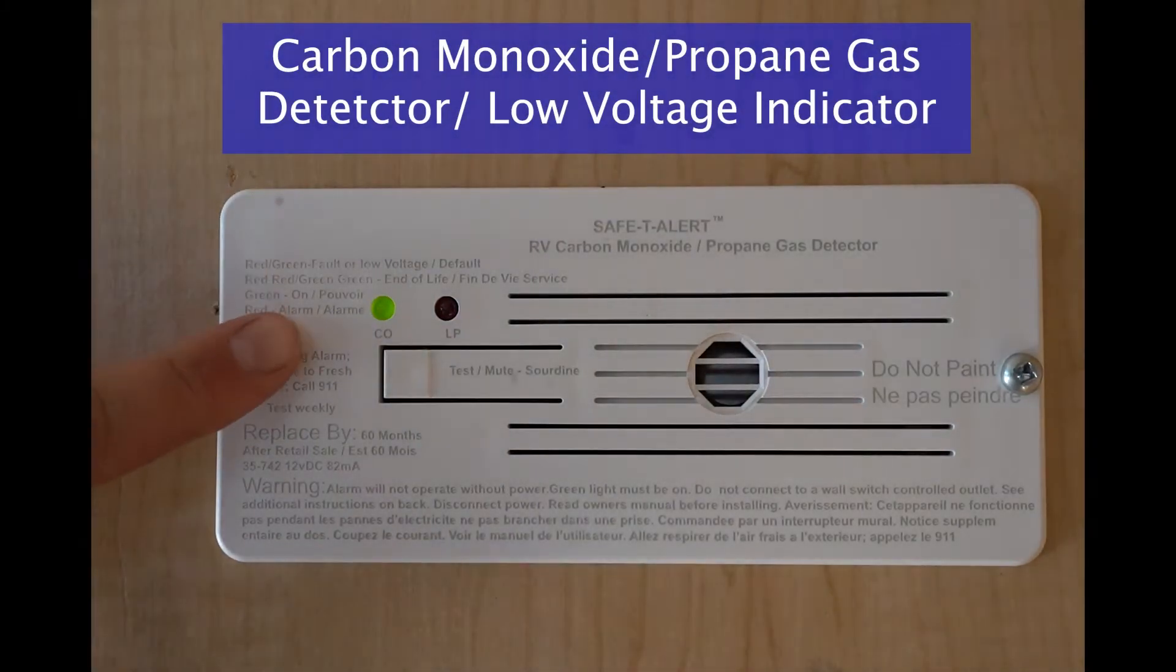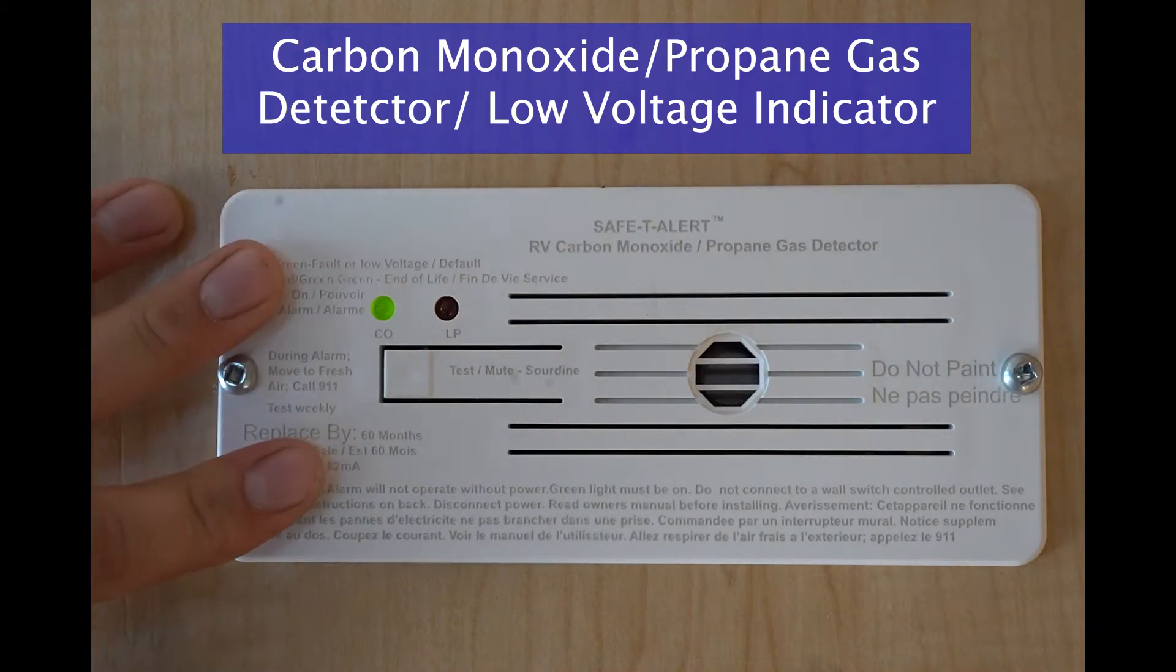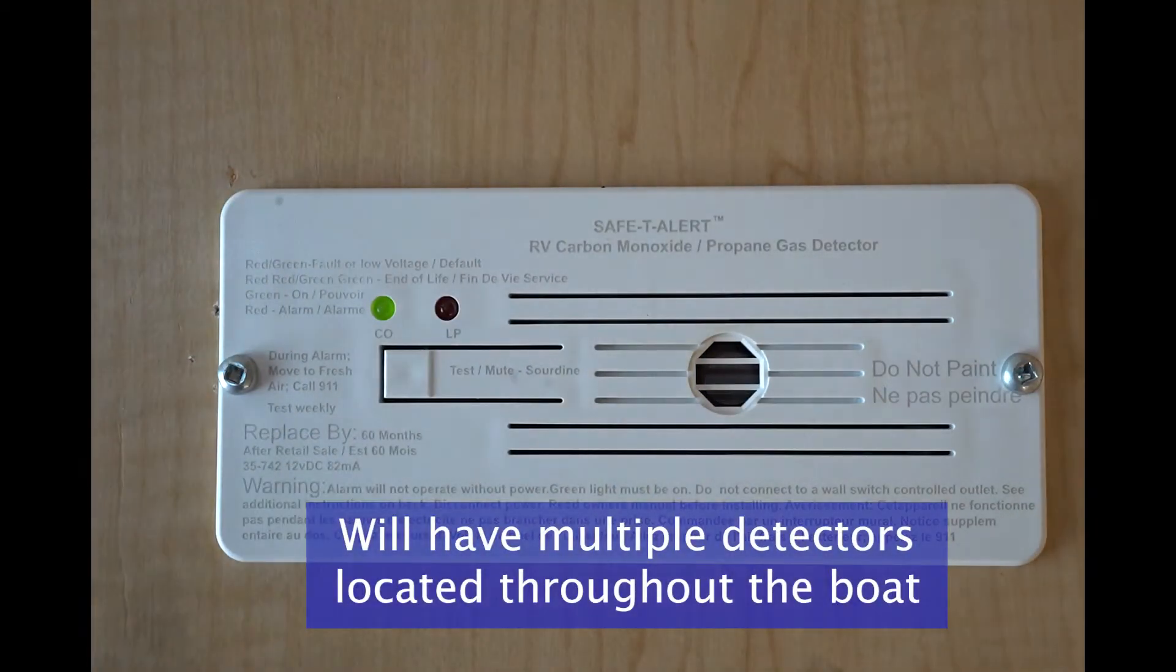Each of the boats will have a carbon monoxide detector, propane gas detector, as well as a low voltage warning. They will look exactly like this. Each boat has multiple detectors located throughout the boat.